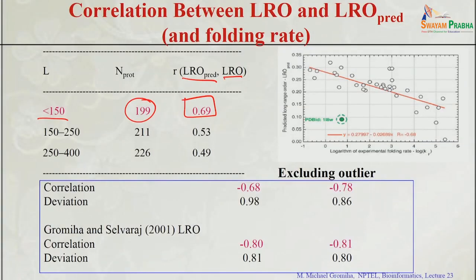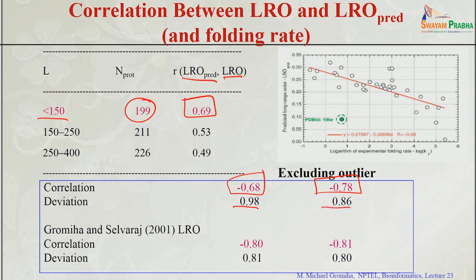Converting predicted LRO into folding rates, they used the same equation with all predicted LRO values. For a set of proteins, the correlation is minus 0.68 with a deviation of 0.98. One outlier exists mainly because it contains disulfide bonds, which cannot be accounted for. Excluding that outlier, the correlation improves to minus 0.78 with a deviation of 0.86. Comparing with using known 3D structures (correlation 0.81), the indirect sequence-based method achieves 0.78 — nearly comparable.